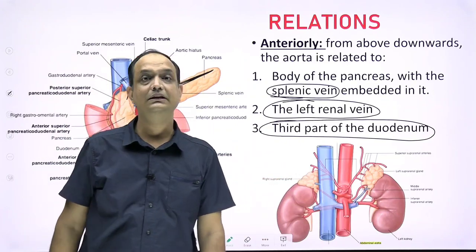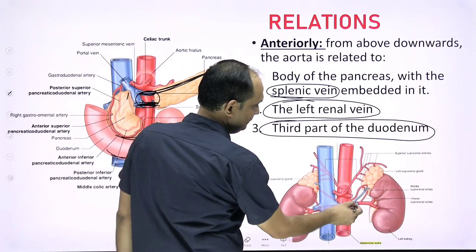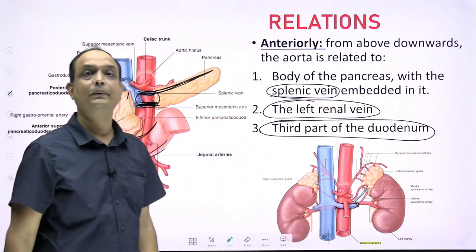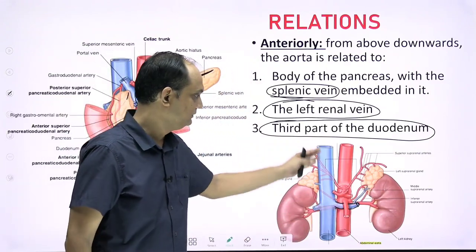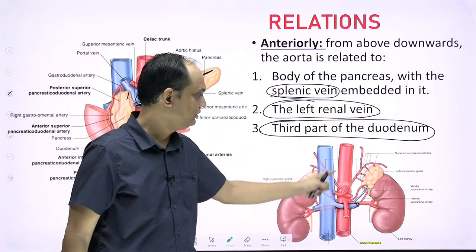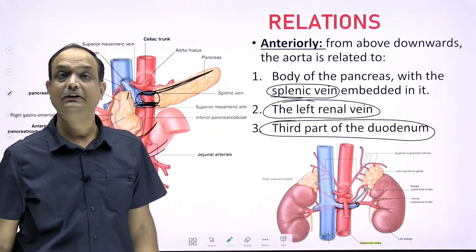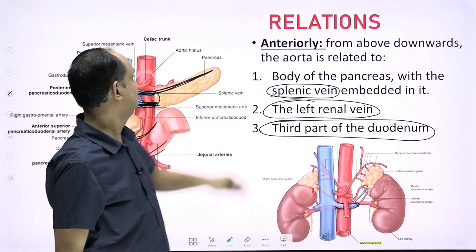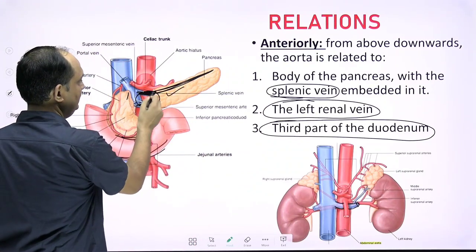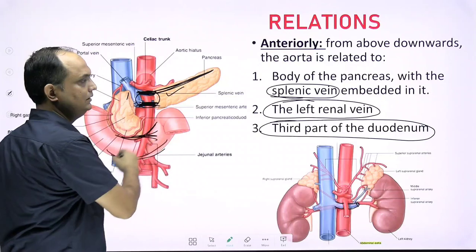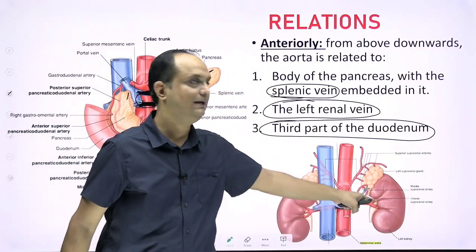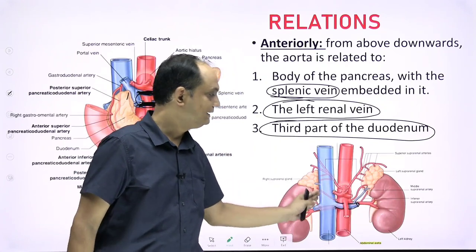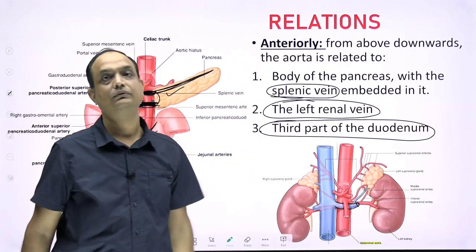In this image, you can see the left renal vein, which drains into the inferior vena cava on the right side. The right renal vein does not cross the aorta, but the left renal vein must cross the aorta to reach the IVC. Which renal vein crosses? The left — because the inferior vena cava is on the right side, so the left has to cross the midline.